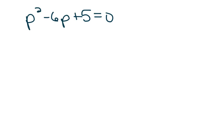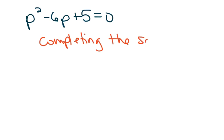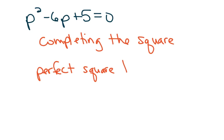Another method for solving quadratics — though not the most convenient — is called completing the square. Completing the square means creating something called a perfect square trinomial. You've actually seen these before. Perfect square trinomials are ones where the last term is a perfect square, and the middle term is the sum of the same two numbers that multiply to give you that last term.